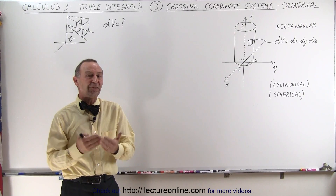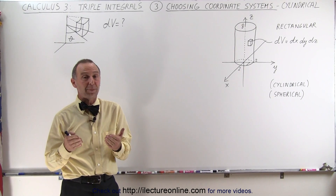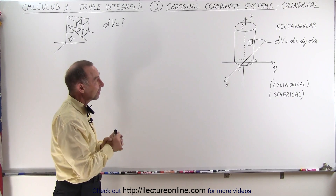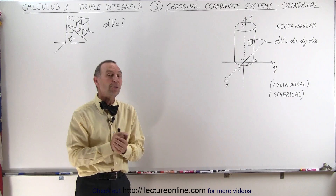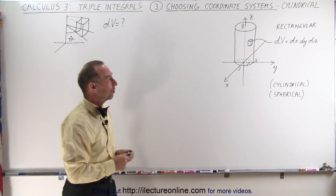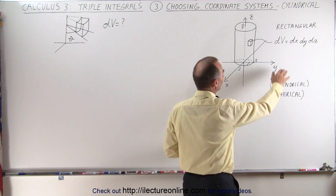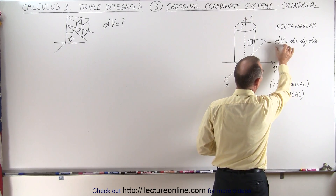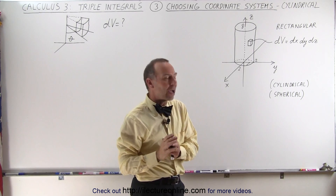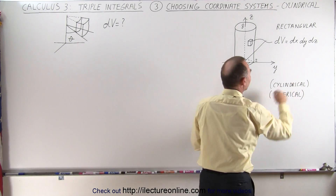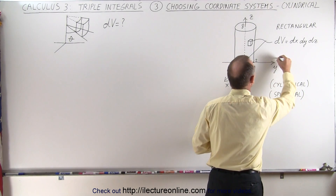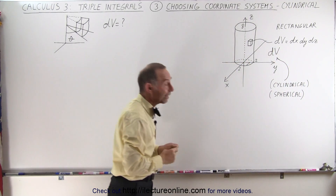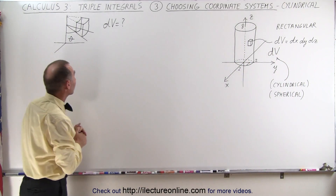Welcome to Electronline. In this video we're going to solve the same problems we did in the previous video — finding the volume of a cylinder — but this time using cylindrical coordinate systems instead of rectangular. We showed that rectangular coordinates work using dx, dy, dz as the small volume element. Now we need to figure out what the cylindrical volume element dv looks like, and that's the key to doing it in cylindrical coordinates.